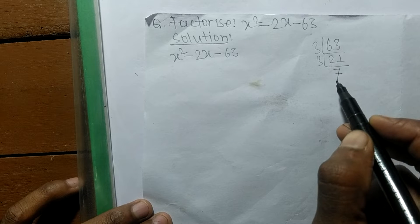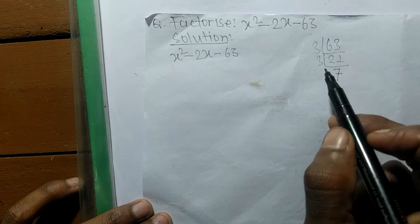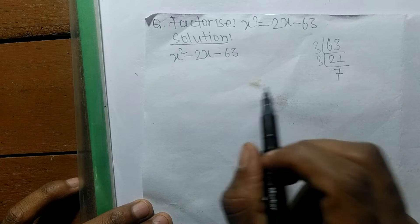Now from these numbers we have to find out such a number that by adding up which we have to take the result minus 2.